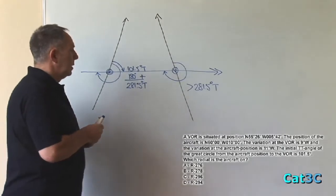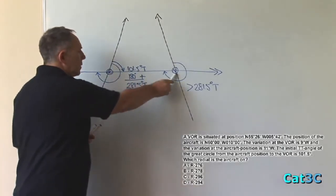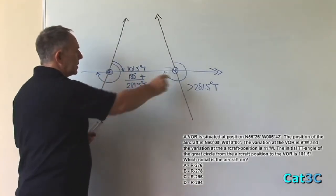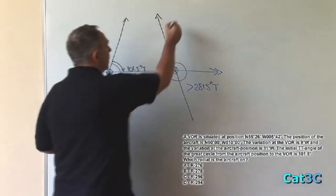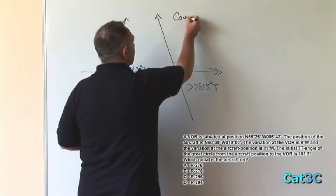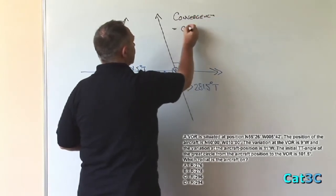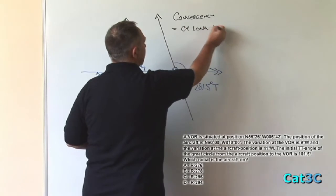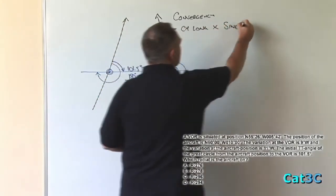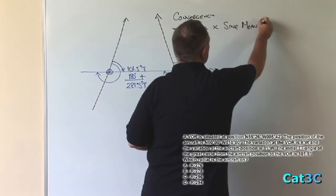By what? The difference between two great circle track angles on the same line is convergency.